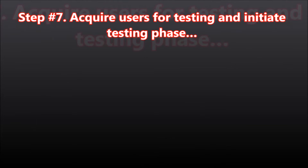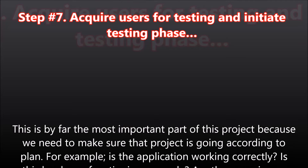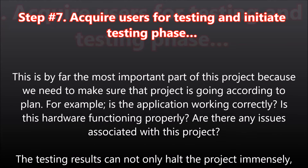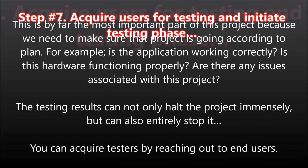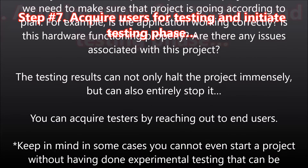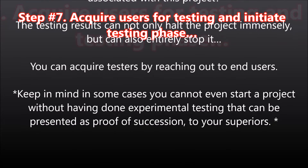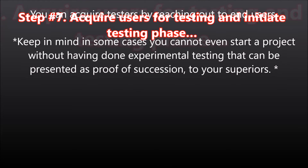Step number seven: acquire users for testing and initiate the testing phase. This is by far the most important part of the project, because we need to make sure everything is going according to plan. Is the application working correctly? Is the hardware functioning properly? Are there any issues associated with this project? The testing results can not only halt the project significantly, but can also entirely stop it. You can acquire testers by reaching out to end users. Keep in mind that in some cases you cannot even start a project without experimental testing that can be presented as proof of success to your superiors.